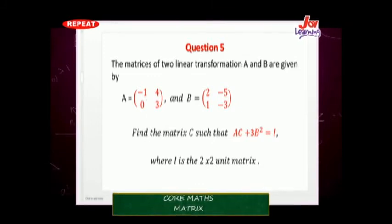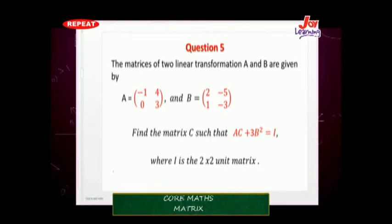Let's look at an interesting example involving linear transformations. The matrices of two linear transformations A and B are given by A equals negative 1, 4, 0, 3 and B equals 2, negative 5, 1, negative 3. Find the matrix C such that A times C plus 3B squared equals I, where I is the 2x2 unit matrix with entries 1, 0, 0, 1.